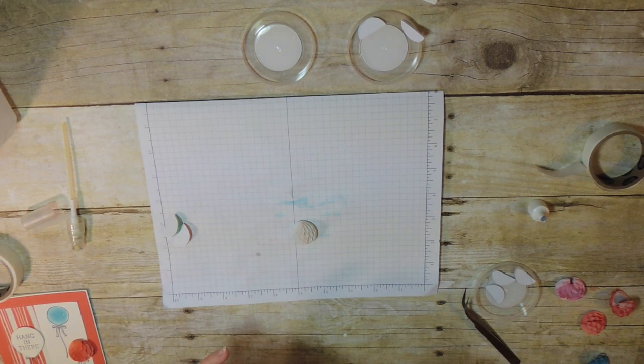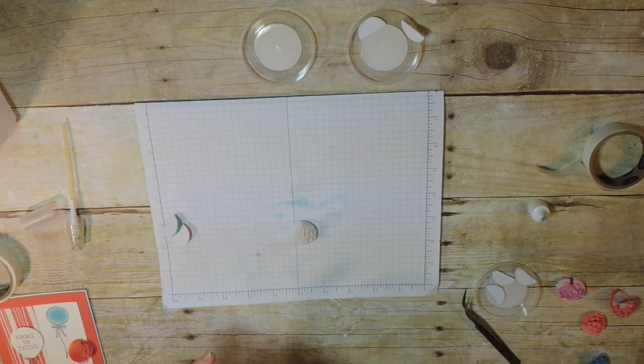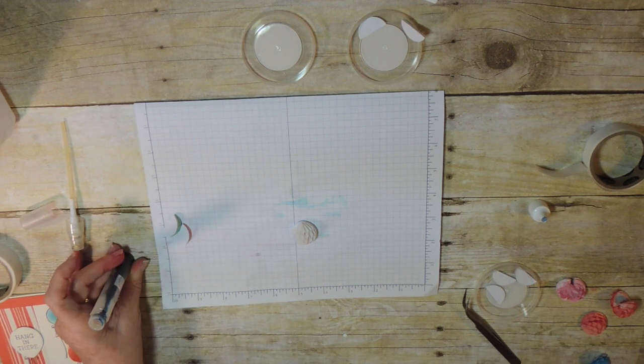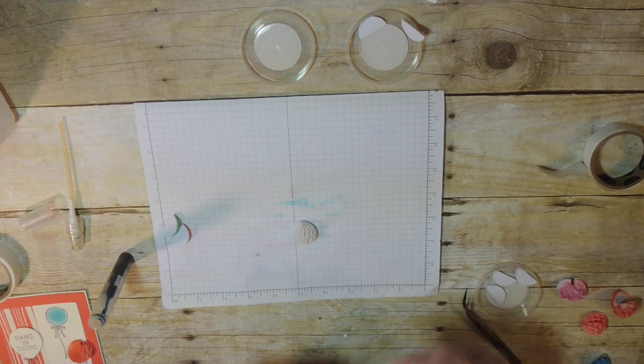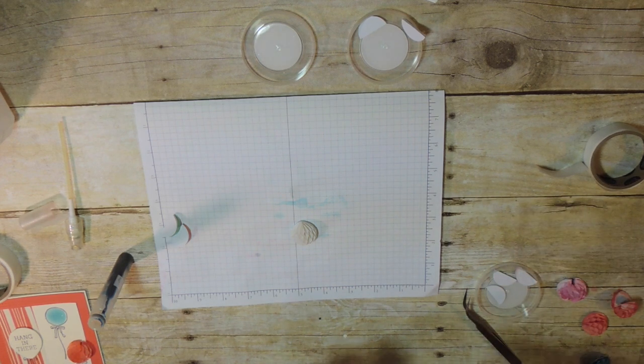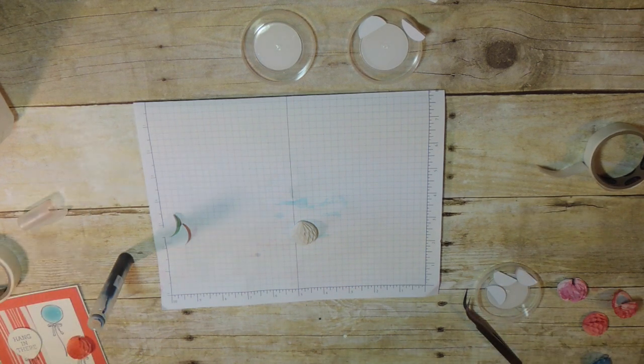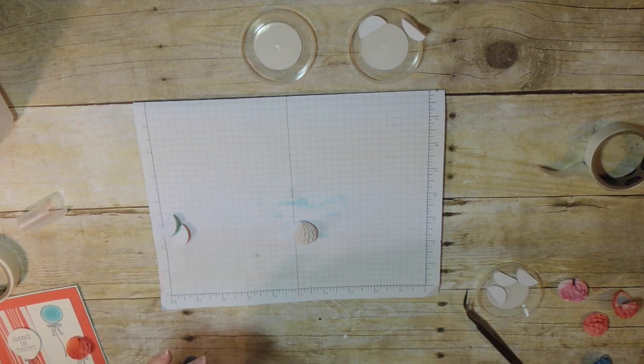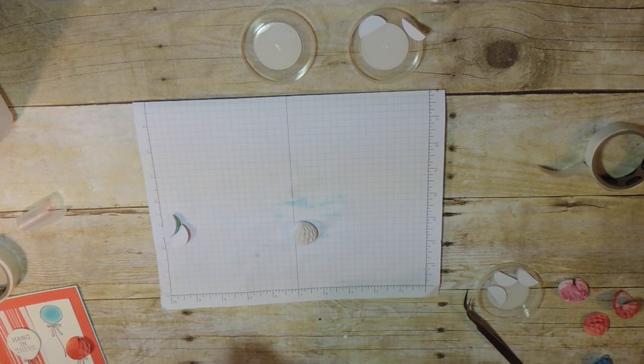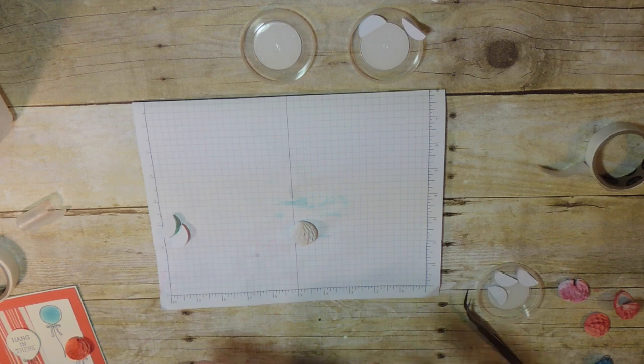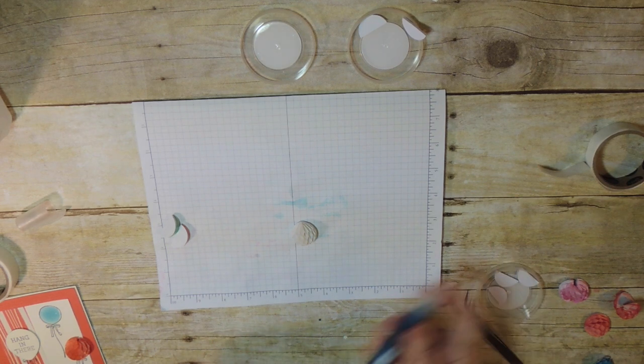So you put maybe five, six drops, depending on how intense you want the color. And now I'm going to shake this up, put the spritzer back, and I've used this spritzer for other colors. Just rinse it out really well, press the spritzer every time.